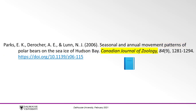The journal title is the title of the publication in which the article has been published — in this case, the Canadian Journal of Zoology. In an APA citation, the journal title appears after the article title. The journal title is in italics to distinguish it from the article title, and the journal title uses headline style capitalization, which means that all important words are capitalized — most words except words like 'the' and 'a'.